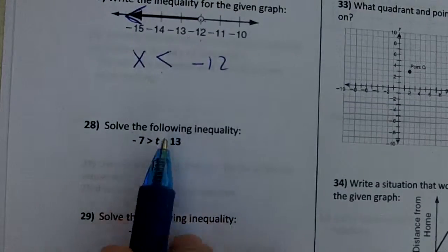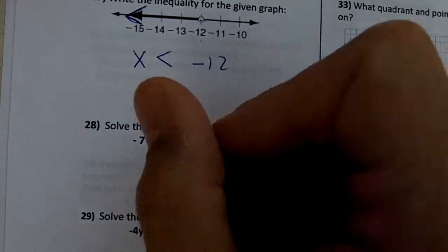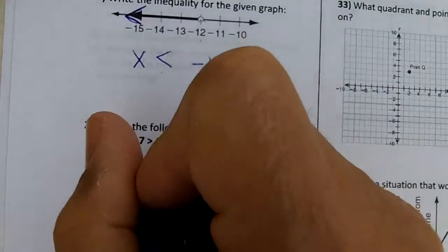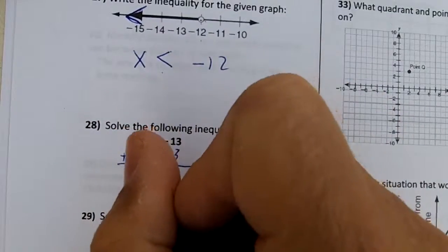And number 28. Negative 7, T minus 13. Let's move over the 13. So you get 6 greater than T.